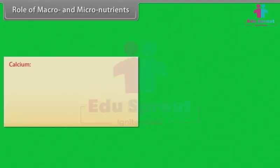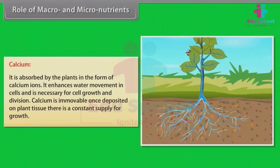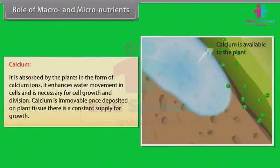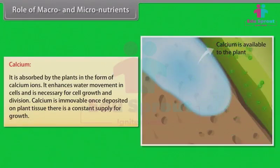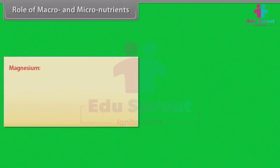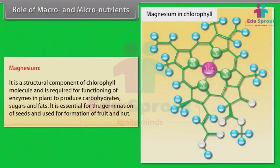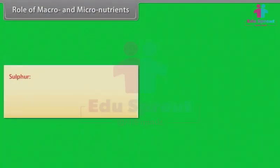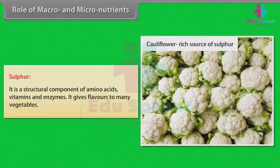Calcium: absorbed by plants in the form of calcium ions; it enhances water movement in cells and is necessary for cell growth and division. Calcium is immovable — once deposited on plant tissue, there is a constant supply for growth. Magnesium: a structural component of the chlorophyll molecule; required for functioning of enzymes to produce carbohydrates, sugars, and fats; essential for germination of seeds and formation of fruit and nut. Sulfur: a structural component of amino acids, vitamins, and enzymes; it gives flavor to many vegetables.